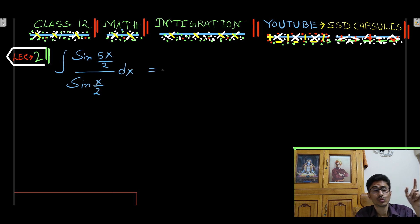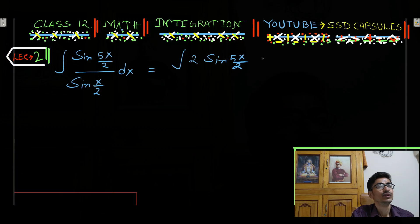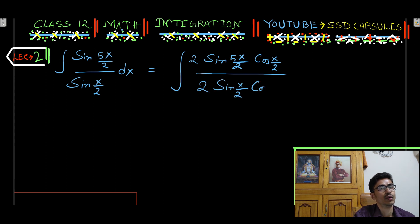To solve this we multiply both numerator and denominator by 2 cos x by 2 so that we can use a well known trigonometric formula. So we're multiplying this integrand by 2 cos x by 2. This becomes integration 2 sin x by 2 cos x by 2 dx.